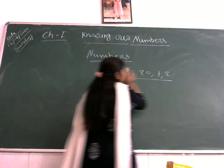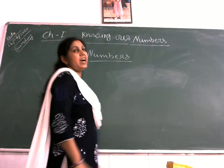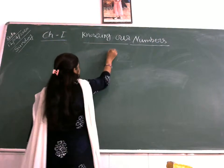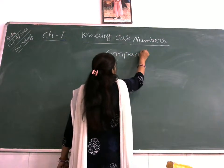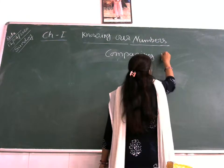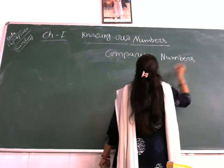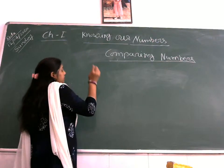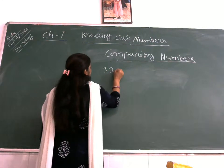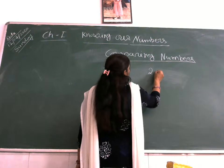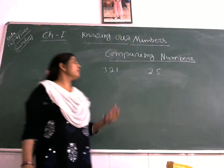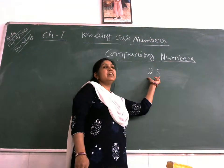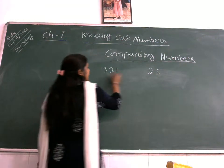Now how can we compare numbers? Let's start comparing numbers. I am writing here some numbers like 321 and 25. Which one is greater and which one is smaller? How can we identify? Definitely this side is a 3-digit number and this side is a 2-digit number, so the 3-digit number is greater.